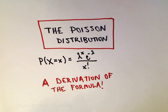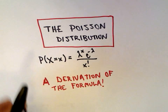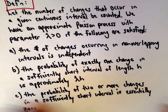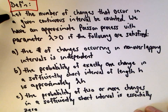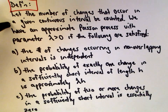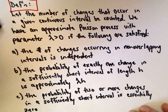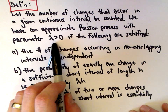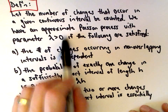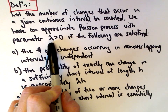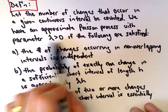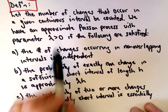It turns out you can model these situations using a Poisson distribution, and in this video we're going to justify that formula. So let's go through the definition. We'll let the number of changes that occur in a given continuous interval be counted — maybe the number of phone calls from 11 a.m. to noon. We have an approximate Poisson process with parameter lambda greater than zero if the following conditions are satisfied. We'll talk about what lambda physically represents, probably in a separate video when we do examples.